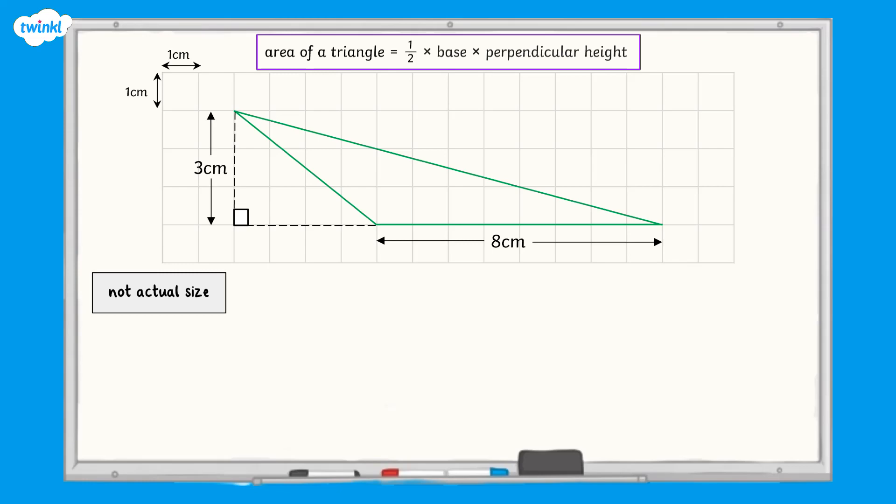When we use the formula, we take the actual base of the triangle that we started with, not the extended length. So the area of the triangle is half multiplied by 8 multiplied by 3, which equals 12 cm squared.